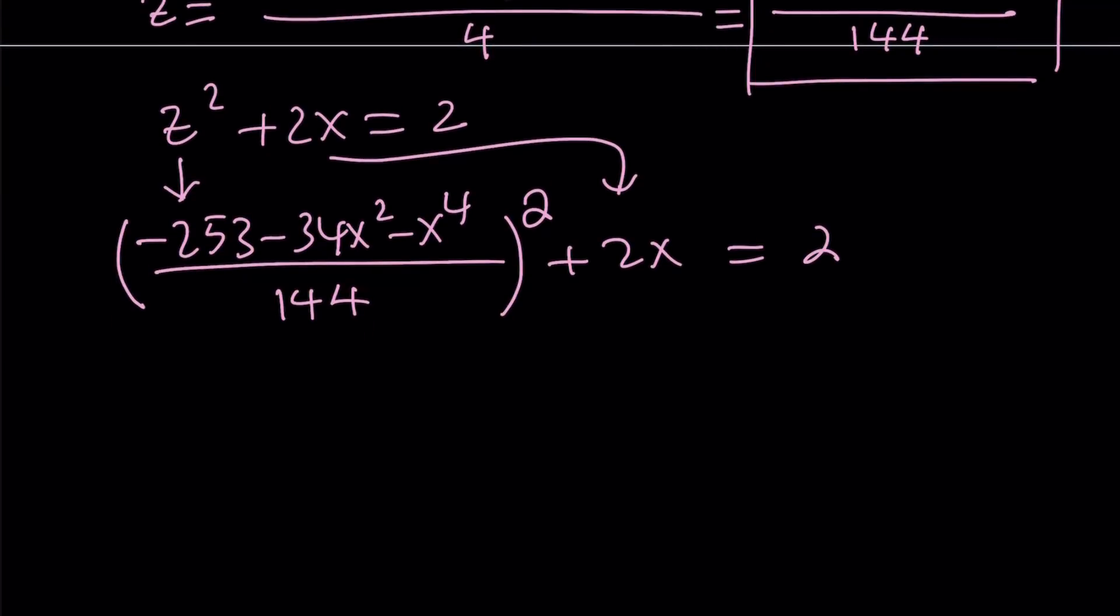I'm going to replace z with that. So it's going to be negative 253 minus 34x squared minus x to the fourth power, divided by 144, and that is going to be squared. And now we're going to simplify what's inside the parentheses.